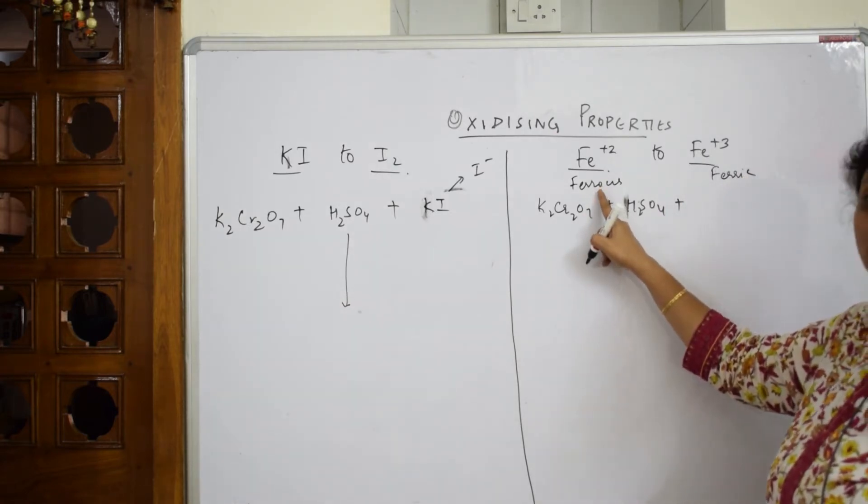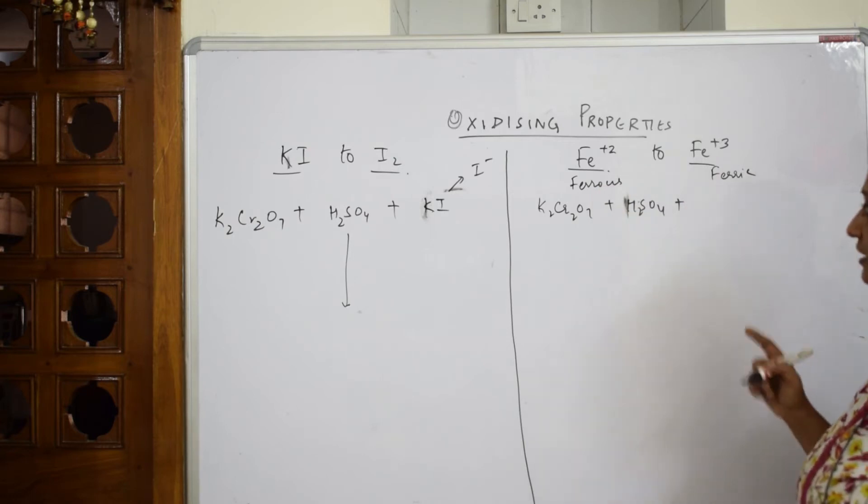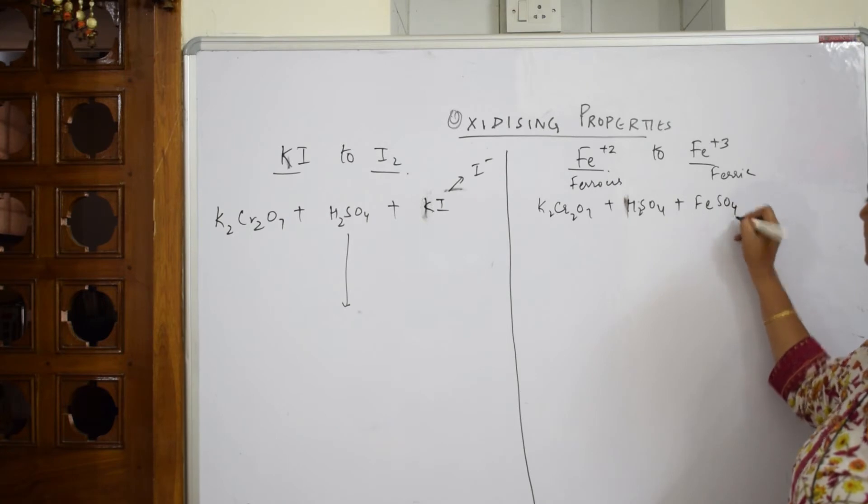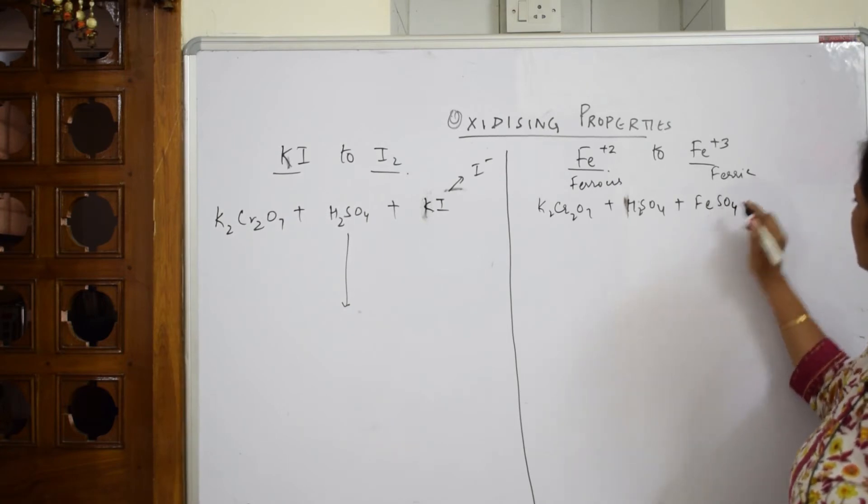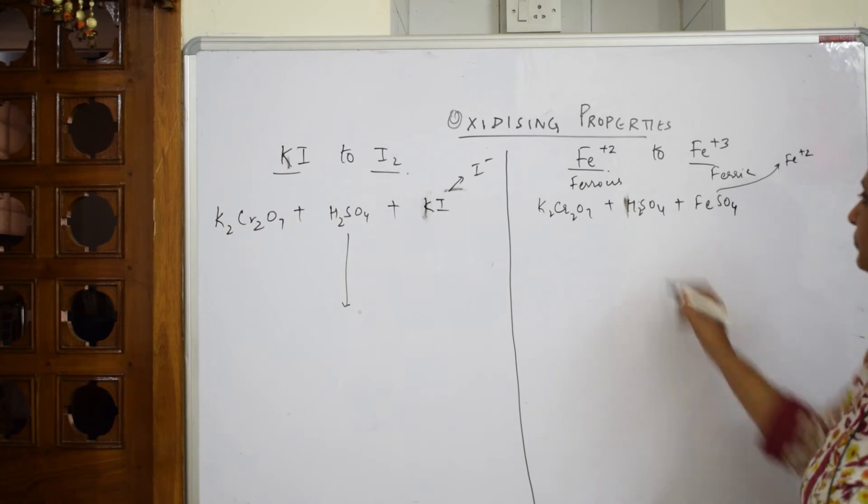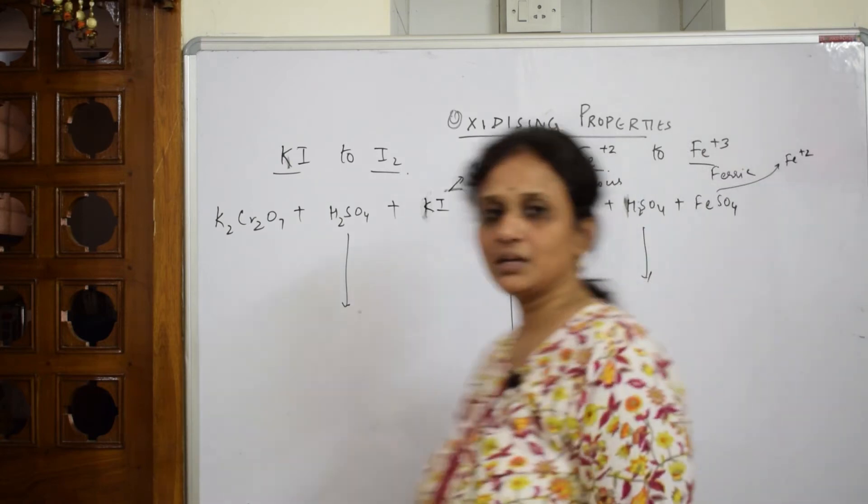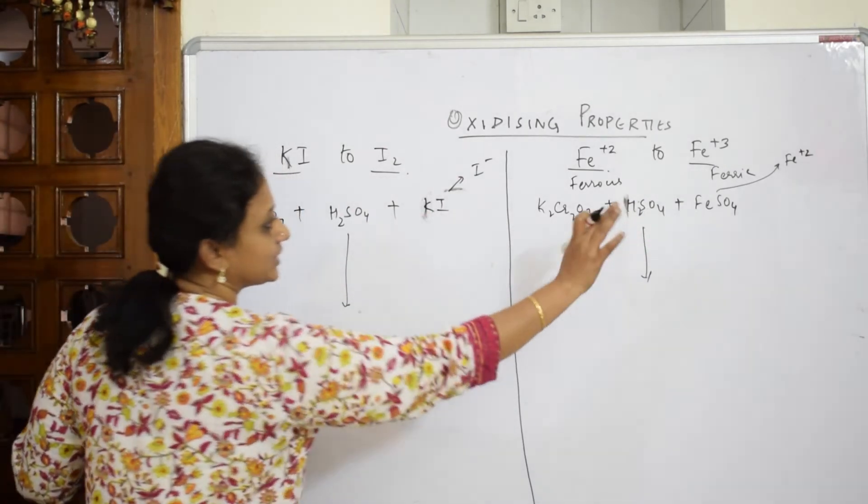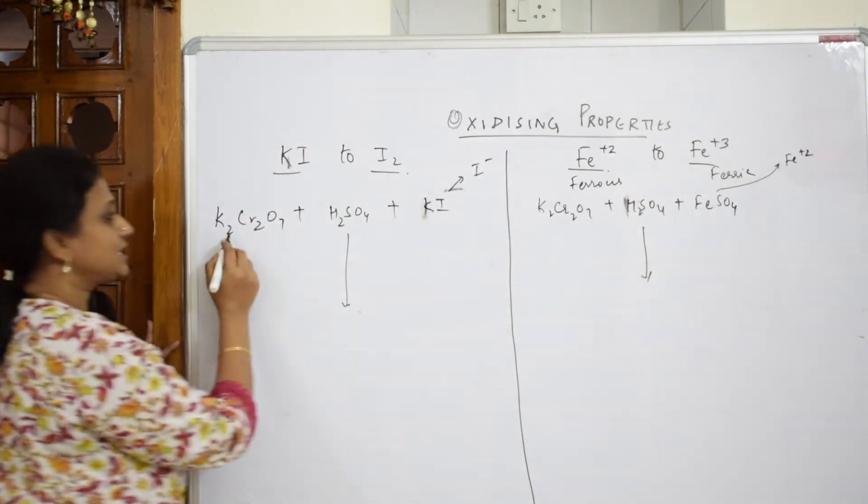Now I have to convert ferrous salt to ferric salt, oxidized. Now ferrous salt FeSO4, ferrous sulfate, or in the exam it may be given as Fe2+, not a problem. Let us see both the products are same, only difference lies here and here.